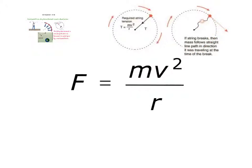So if you're whirling an object around in a circle on a string, it's the tension that provides that centripetal force. But if that string breaks, then the mass will follow a straight line path in the direction it was traveling at the time of the break. It's not going to travel radially around and continue moving in a circular path. It's just going to move in a straight line path from that point.